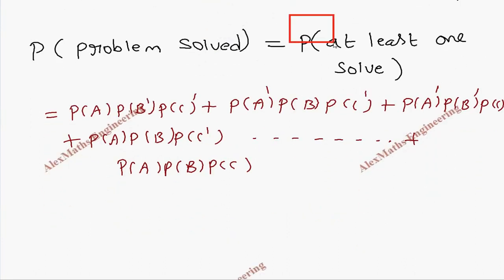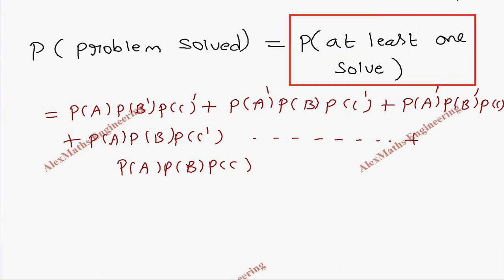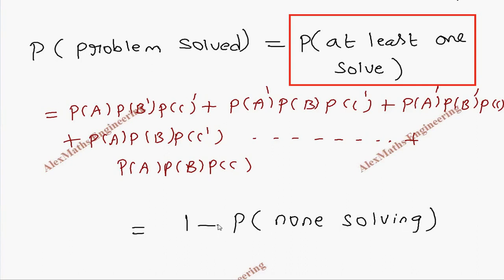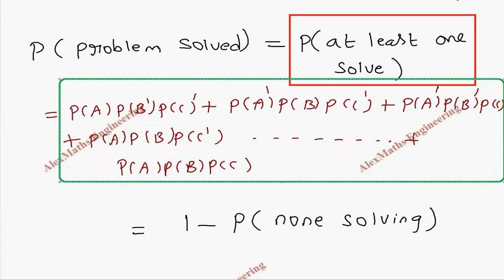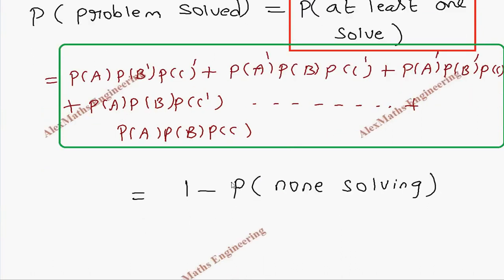Since we have the expression P of at least one solving, we can take this as 1 minus P of none solving. Nobody solving is the only case remaining — if I subtract from the total probability, we get the answer for the rest of the cases. So it is easier to use: P of at least one solving equals 1 minus P of none solving.